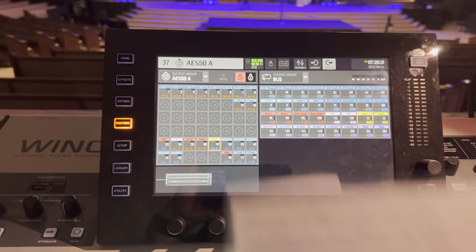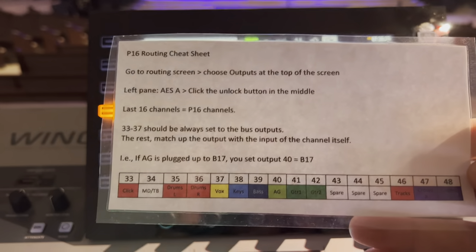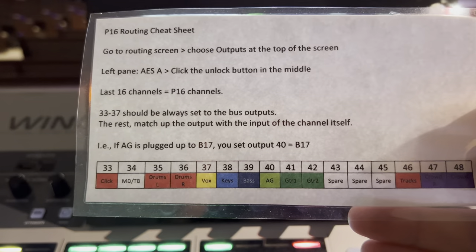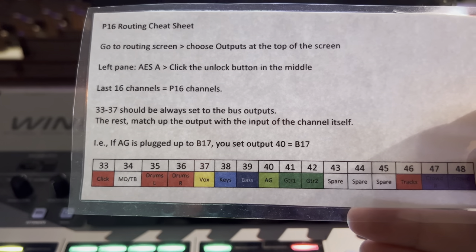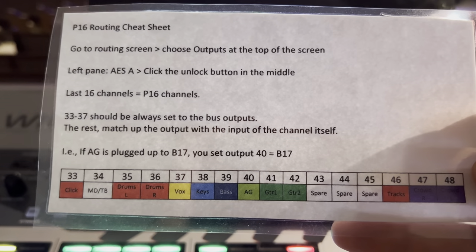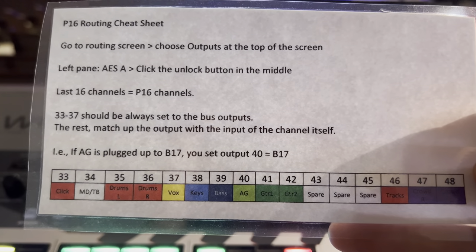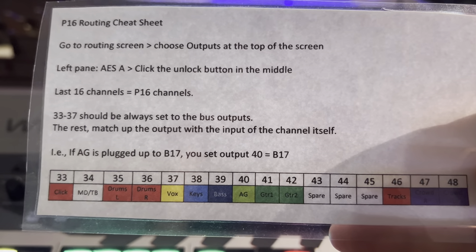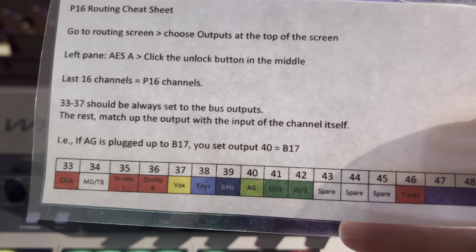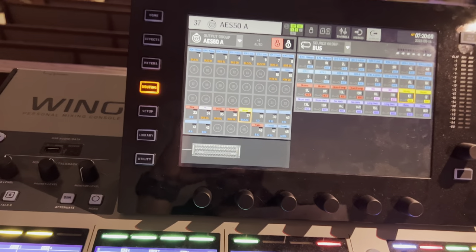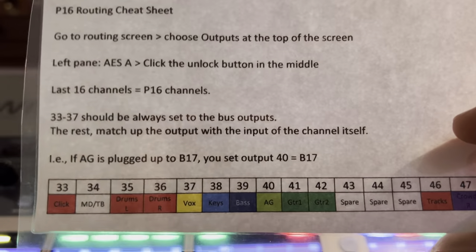To keep things organized, I made a routing chart that defines where every instrument will always land. Keys, bass, and acoustic start at channel 38, and there are spare channels reserved for occasional instruments like violin or anything special we need to add. So all I have to do is match my channel assignments to this chart.